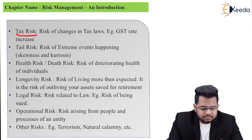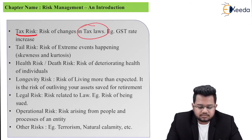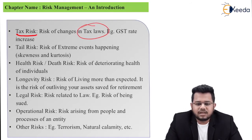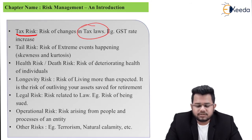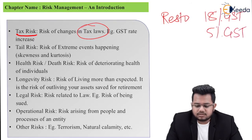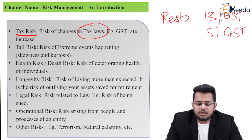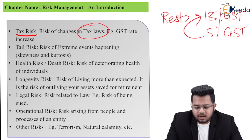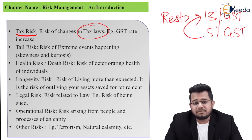T stands for tax risk — the risk of changes in tax laws. For example, GST rate increases. In India, the GST for restaurants was earlier 18% but was brought down to 5%, which was a favorable condition for consumers. However, had it gone the other way — from 5% up to 18% — that would have been a tax risk.